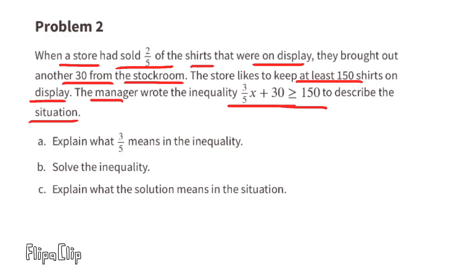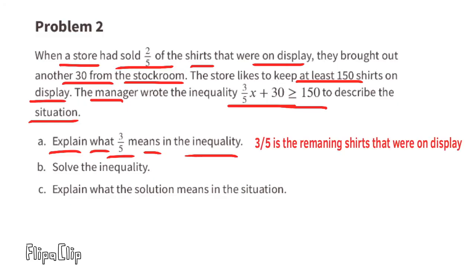Problem number two: When a store had sold two-fifths of the shirts on display, they brought out another 30 from the stock room. The store likes to keep at least 150 shirts on display. The manager wrote the inequality three-fifths times x plus 30 is greater than or equal to 150 to describe the situation. Part a: Explain what three-fifths means in the inequality. Three-fifths represents the remaining shirts on display after two-fifths of the shirts were sold.